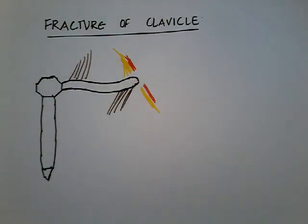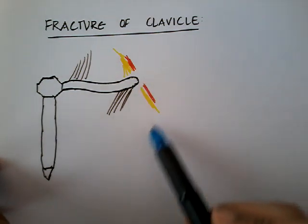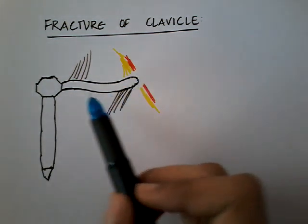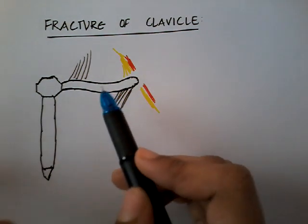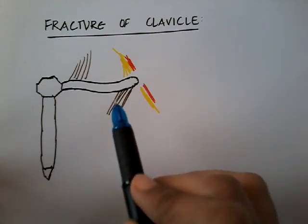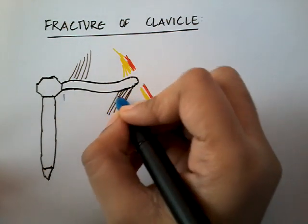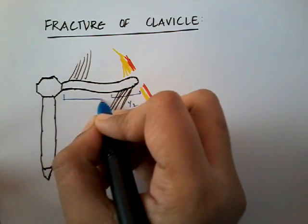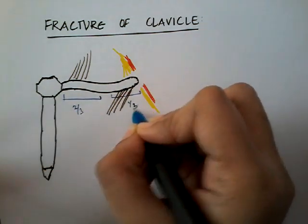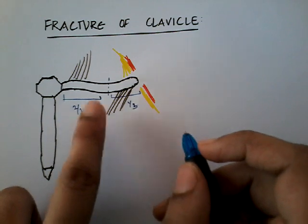Welcome to a new lecture on fracture of clavicle. The clavicle is attached to the sternum at the medial end and to the humerus at the lateral end. The most common point where fracture of clavicle can happen is the junction of the outer one-third (lateral one-third) and medial two-third. At this point there is an increased risk of fracture.